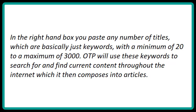In the right-hand box, you paste any number of titles, which are basically just keywords, with a minimum of 20 to a maximum of 3,000. OTP will use these keywords to search for and find current content throughout the Internet, which it then composes into articles.